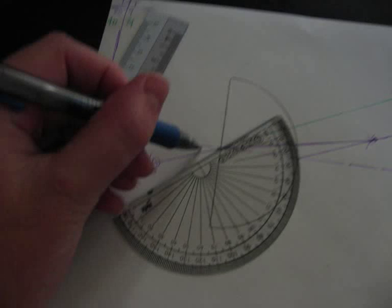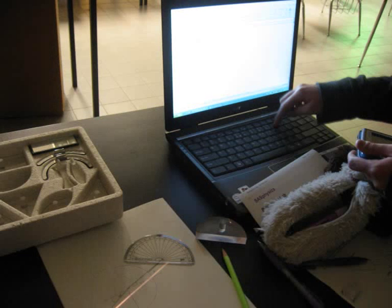After that, you measure the angle of incidence, i, and the angle of refraction, r, and record the data in a table.